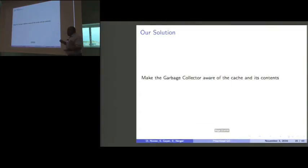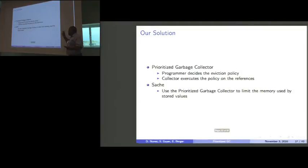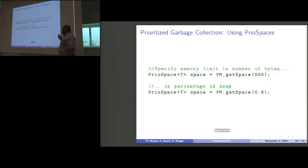Our solution is we're going to make the garbage collector aware of these caches and its contents. To that end, I present two things. One is the prioritized garbage collector, which separates the policy of these references from the actual mechanism that collects them. Mainly our main idea is the programmer will decide what the actual policy for those references are. The collector will actually execute that policy and figure out which references to collect. We're going to use that to build this thing called the sache to limit the memory used by the values that this data structure stores.